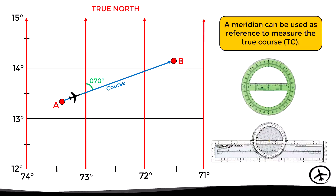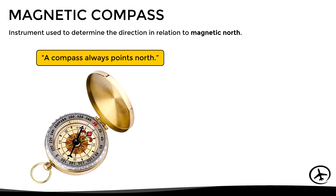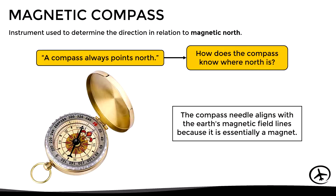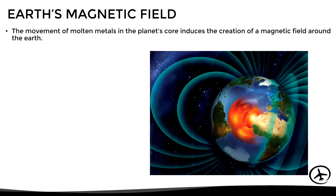The problem is that in a small aircraft we don't have any instrument that indicates the current heading in relation to true north. Instead, we have a magnetic compass. A magnetic compass is an instrument used to determine direction in relation to magnetic north. The compass needle aligns with the earth's magnetic field lines because it is essentially a magnet that is free to rotate around a pivot point. To understand this better, let's look at the earth's magnetic field.